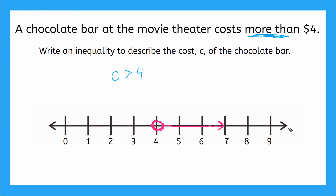So if we wanted to get a chocolate bar at the movie theater, what do we need? What does our solution set tell us? It tells us that we have to bring more than $4 to the theater.